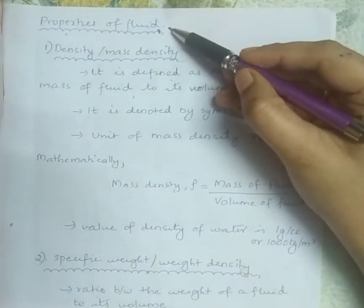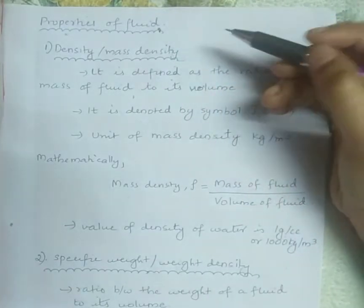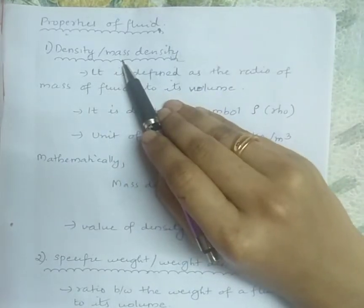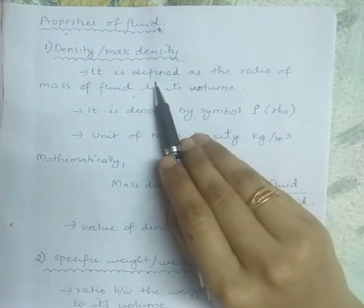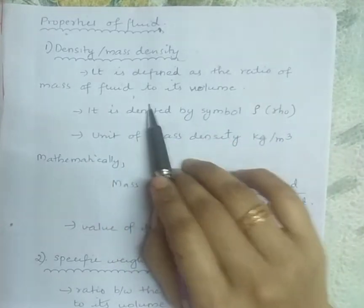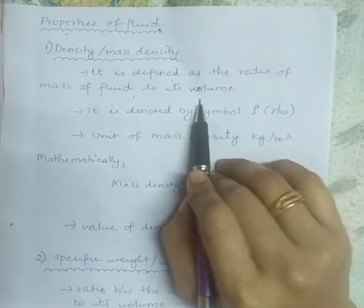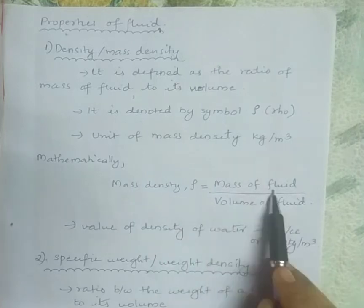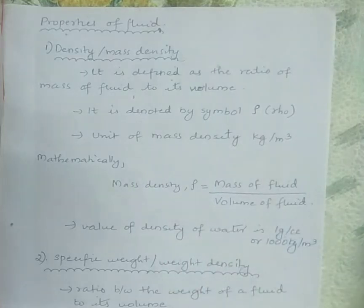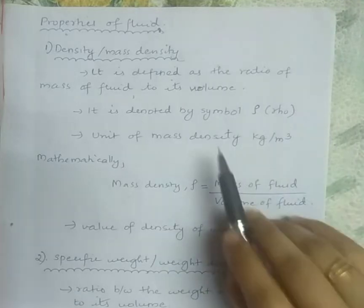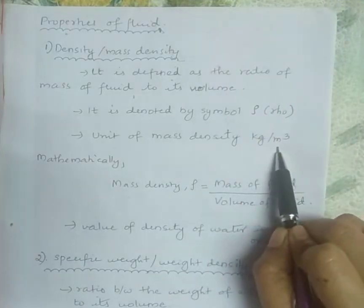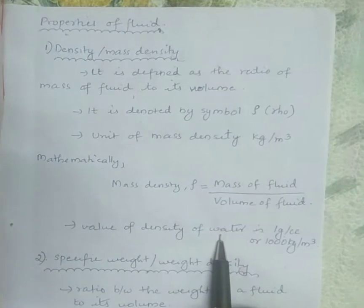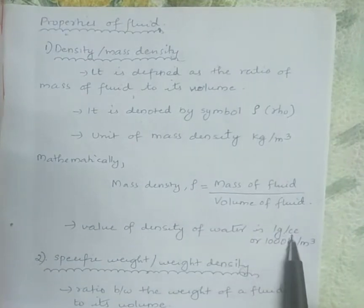Coming to the properties of fluid. First we will see what is density or mass density. It is defined as the ratio of mass of fluid to its volume. Mathematically it is written as rho, the symbol used to denote mass density, equal to mass of fluid divided by volume of fluid. Its unit is kilogram per meter cube, and the value of density of water is taken as 1 gram per cubic centimeter or 1000 kilogram per meter cube.